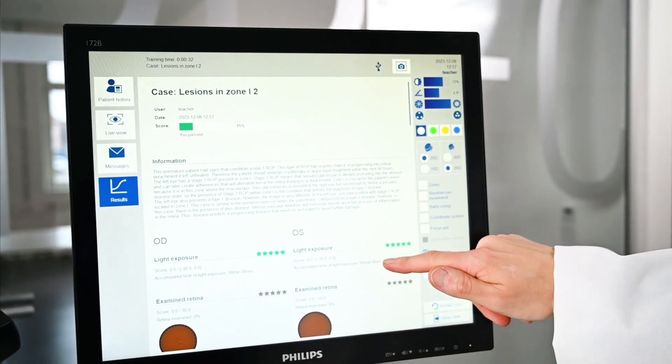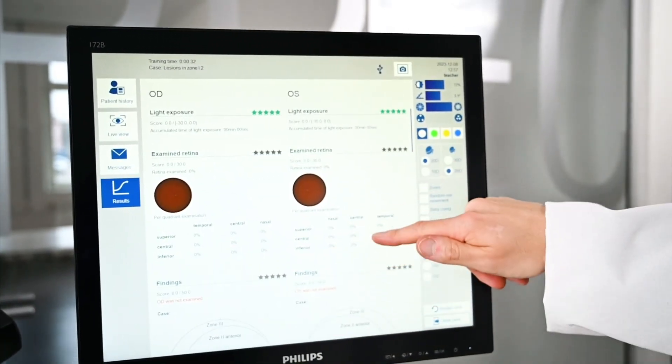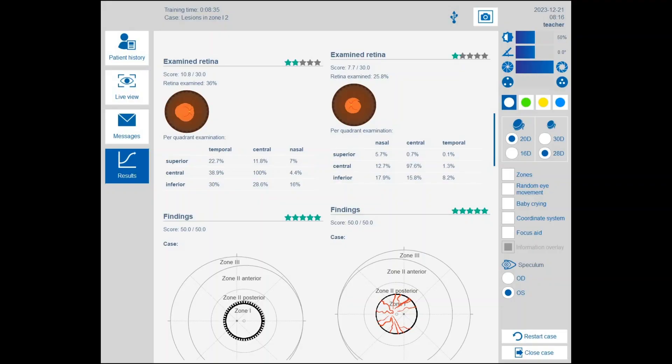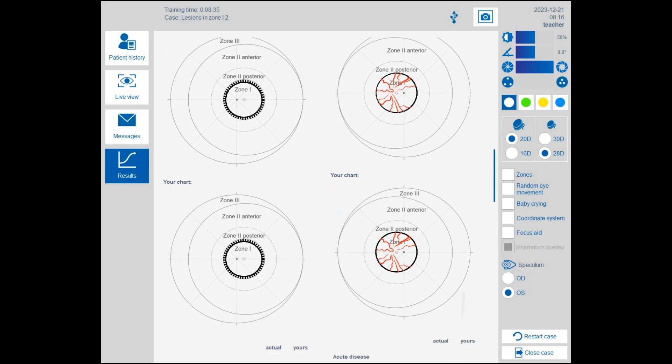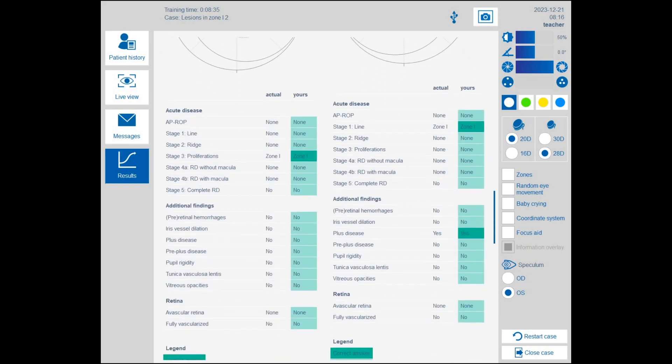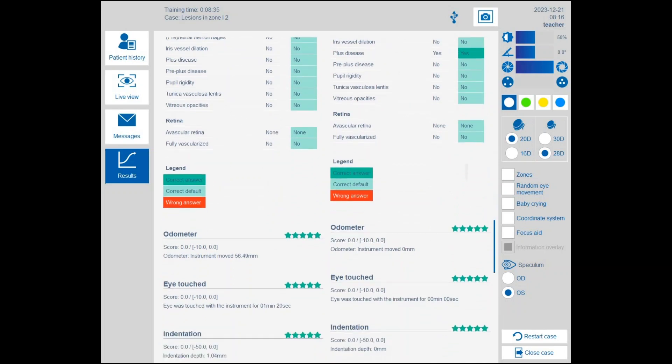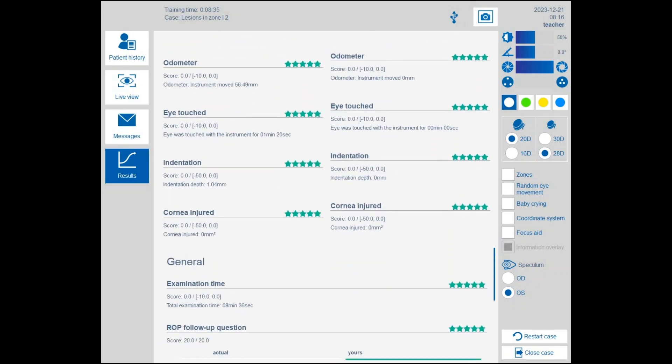After each case, the IC Indirect ROP presents trainees with a detailed performance summary showing, for example, the light exposure, correctness of findings, and appropriate use of indentation. The objective assessment allows trainees to improve their skills systematically.